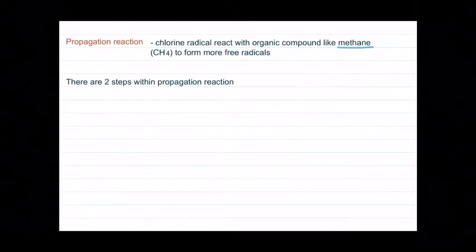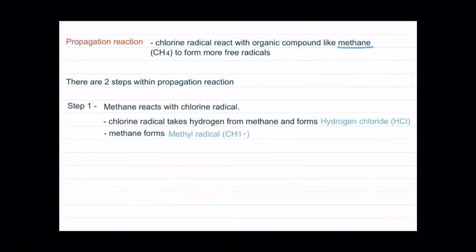There are two steps within propagation reaction. Step 1: Methane reacts with a chlorine radical. The chlorine radical takes hydrogen from methane and forms hydrogen chloride, HCl, and methane forms methyl radical, CH3.